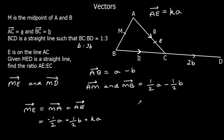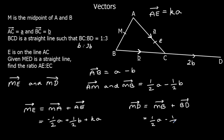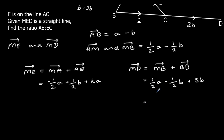Now let's work out M to D. Going M to B then B to D: M to B is half a minus half b, and B to D is 3b. Simplifying: half a, and for b we have 3b minus half b which is five halves b. So M to D equals half a plus five halves b.